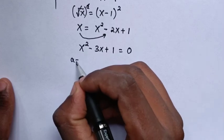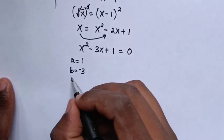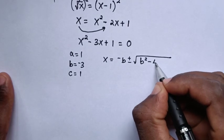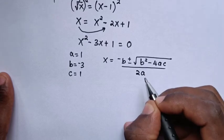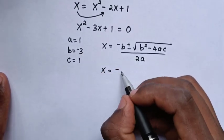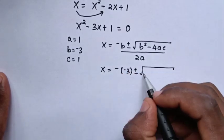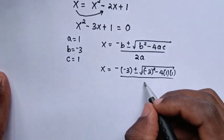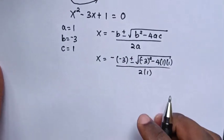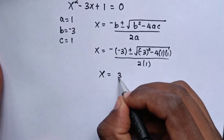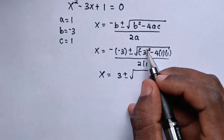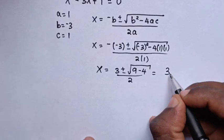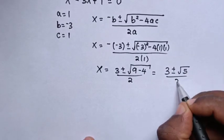From this quadratic equation, a equals 1, b equals negative 3, and c equals 1. Applying the quadratic formula x equals negative b plus or minus square root of b squared minus 4ac over 2a, we get x equals negative (negative 3) plus or minus square root of (negative 3) squared minus 4 times 1 times 1, over 2 times 1. This simplifies to 3 plus or minus square root of 9 minus 4, over 2, giving 3 plus or minus square root of 5, over 2.